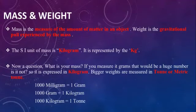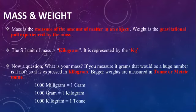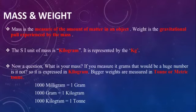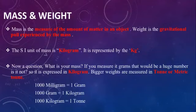The SI unit of mass is kilogram, represented by kg. If you measure your mass in grams, it would be a huge number, so it is expressed in kilograms. Bigger weights are expressed in tons and metric tons. Key formulas: 1 gram equals 1000 milligrams, 1 kilogram equals 1000 grams, and 1 ton equals 1000 kilograms. These values are useful for conversion.